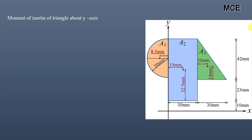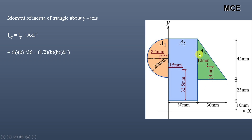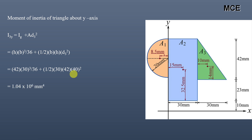The moment of inertia of the triangle about the y-axis equals h·b³/36 + A·d₃², where h = 42 mm (parallel to the y-axis) and b = 30 mm (perpendicular to the y-axis). The distance d₃ between the centroid of the triangle and the y-axis is 30 + 10 = 40 mm. This gives a moment of inertia of the triangle about the y-axis of 1.04 × 10⁶ mm⁴.